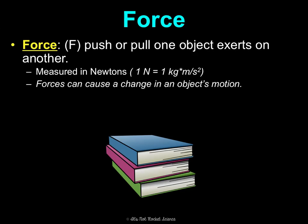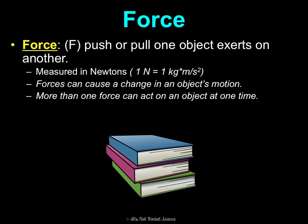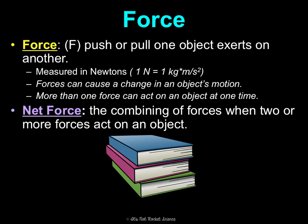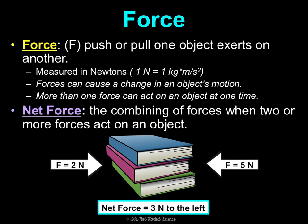More than one force can also act on an object at one time, so something important to know is net force. This is the combining of forces when two or more forces act on an object. For example, if there's a force of two newtons pushing to the right and a force of five newtons pushing to the left, the net force would be three newtons to the left, because two newtons pushing right cancels with two newtons pushing left, leaving three newtons pushing left.